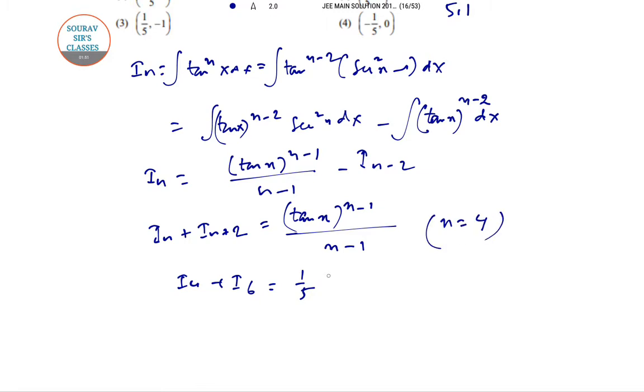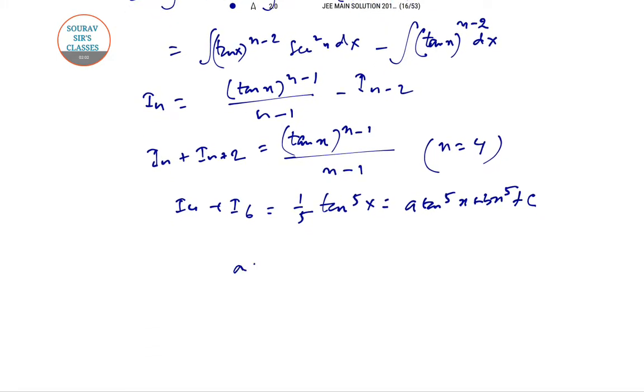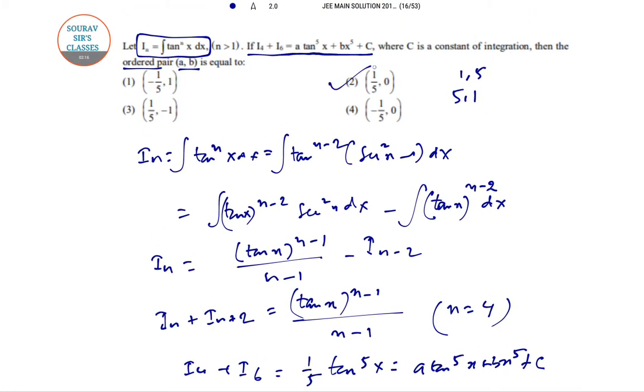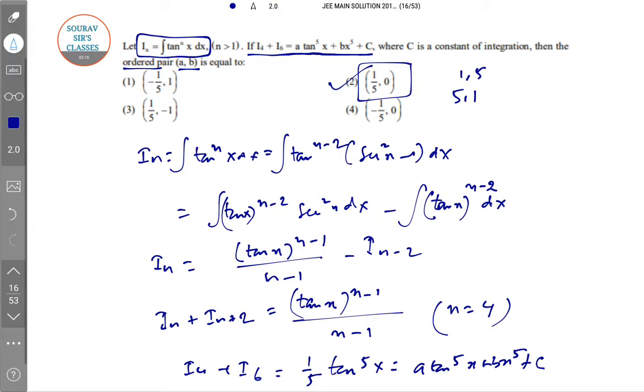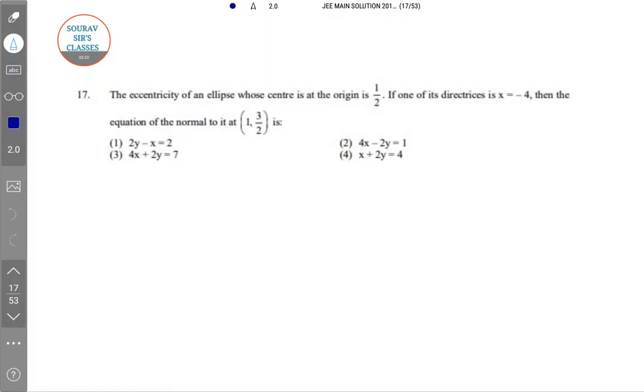Now if we put n equal to 6, because they have I4 and I6, we get I6 plus I4 equals 1 by 5 tan to the power 5x. Comparing with this, we get a equal to 1 by 5, b equal to 0, and c is also equal to 0. So the ordered pair is 1 by 5 comma 0. This is the answer to the question.